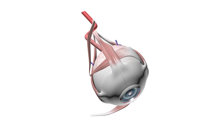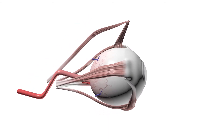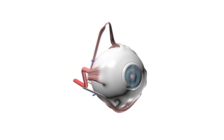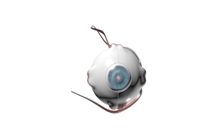These muscles are supplied by three cranial nerves. Cranial nerve 4, which innervates the superior oblique. Cranial nerve 6, which innervates the lateral rectus. And cranial nerve 3, which controls the remainder of the extraocular muscles.